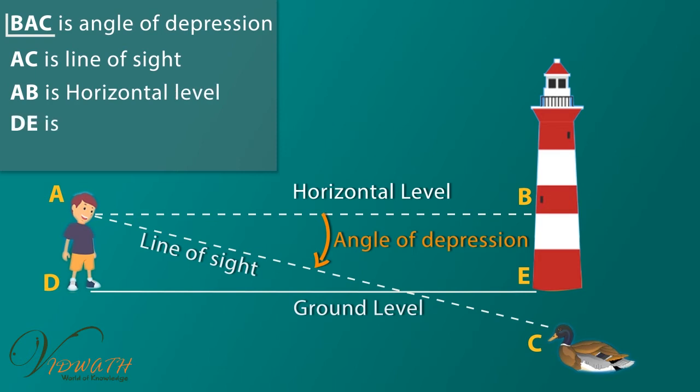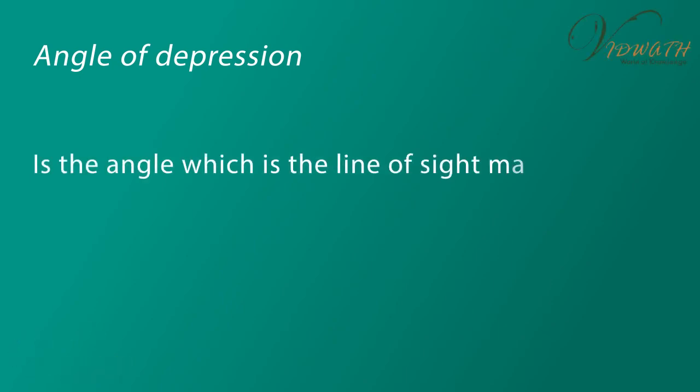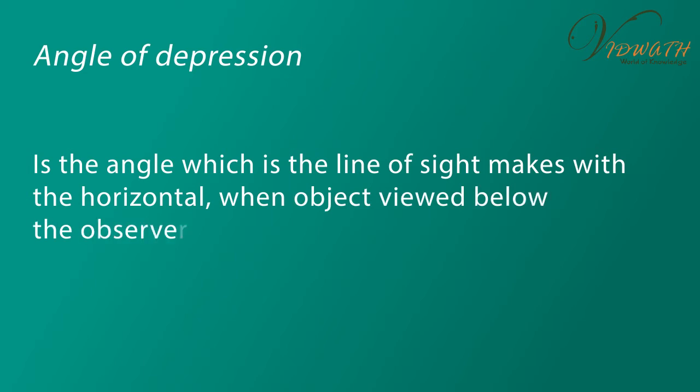You can see in this figure, angle BAC is angle of depression. AC is line of sight, AB is horizontal level, DE is ground level, AD is height of the boy. These information are necessary to know to solve the above problem. Angle of depression is the angle which the line of sight makes with the horizontal when object viewed below the observer.